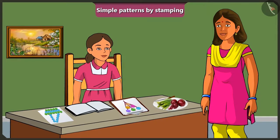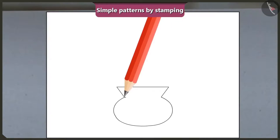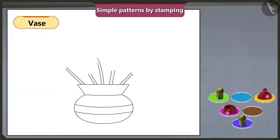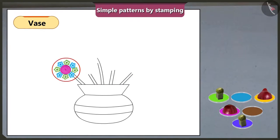Absolutely. Yes, Vinny, let me show you. See, Vinny, first of all, we will make a drawing like this on a paper. Oh, this looks like a vase. Yes, it is a picture of a vase. Now, with the help of onion and lady's finger, we will make flowers like this. Mummy, since this picture has five stems, so shall we make five such flowers? Yes, Vinny.